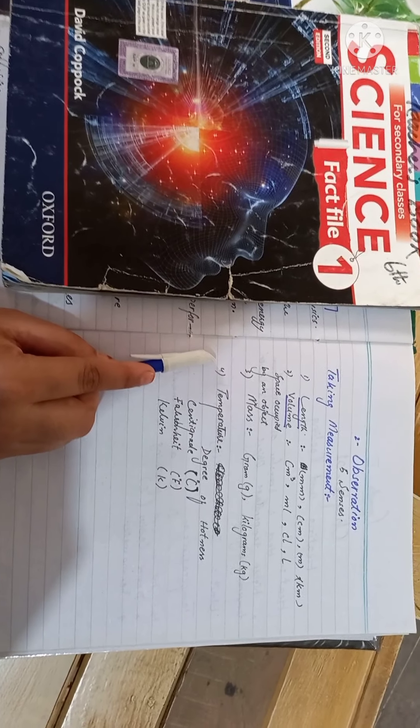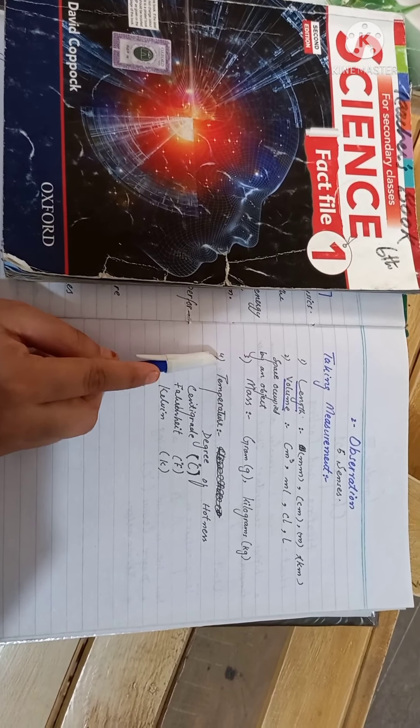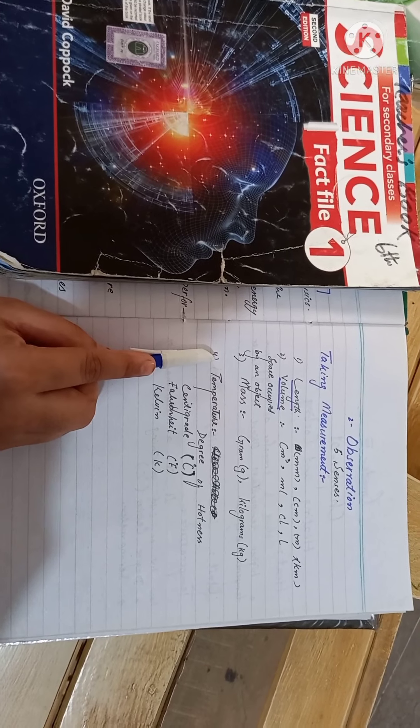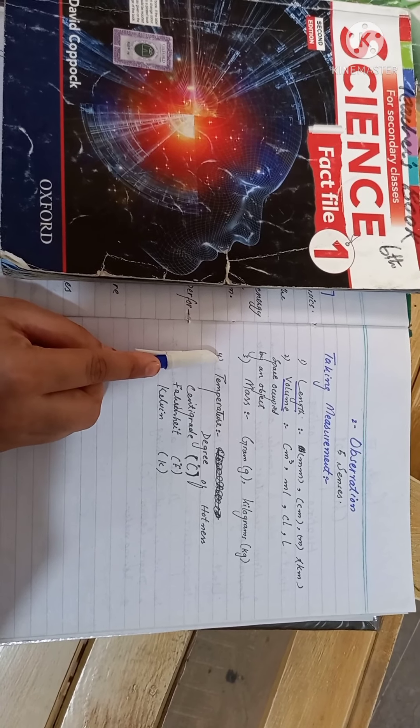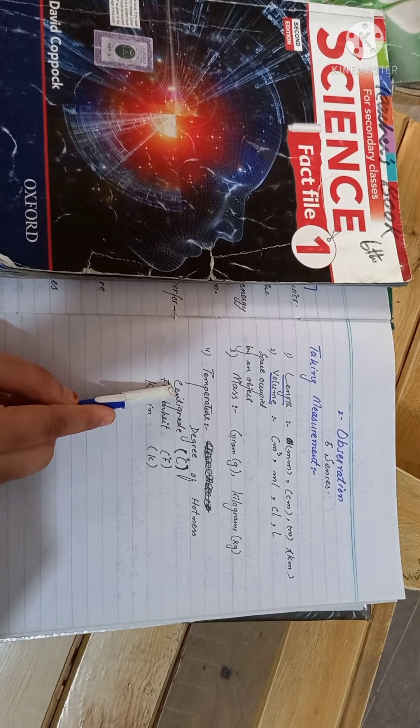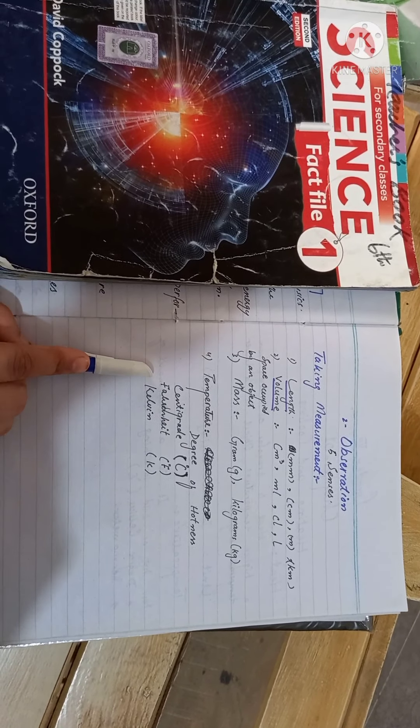The fourth thing is temperature. Temperature means that if things are warm or cold, it is necessary to know for our chemical handling properly. This unit is used in centigrade, Fahrenheit and Kelvin.